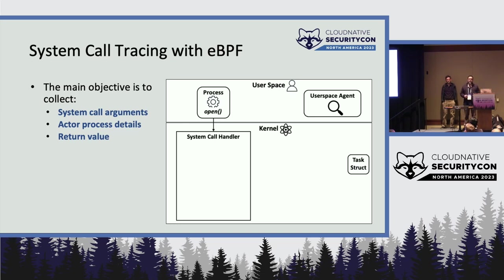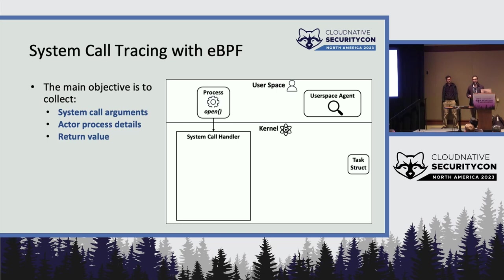We are primarily using eBPF for syscall tracing because it's very effective for threat monitoring and detection. When using syscall tracing for threat detection, there are three main objectives: number one, capture the input arguments of the system calls so you can figure out what it is trying to do; number two, capture the details of the actor process — the process that invoked the system call; number three, you may also need to capture the return value of the system call to determine if it was successful or returned an error.